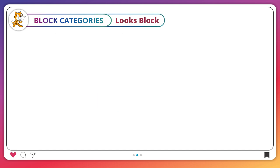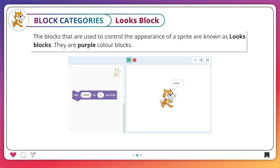Looks blocks. The blocks that are used to control the appearance of a sprite are known as looks blocks. They are purple color blocks.